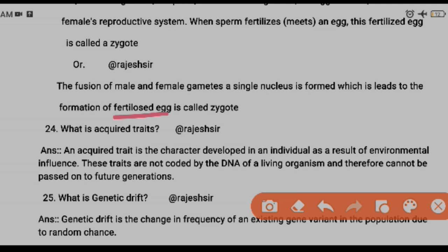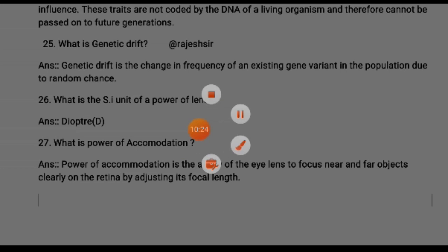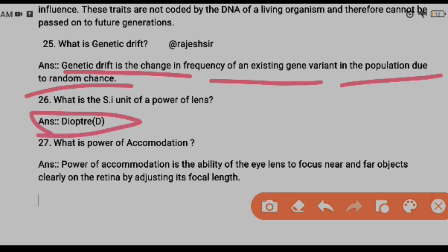Question twenty-five: what is genetic drift? Genetic drift means a drastic change in the frequency of existing gene variants in a population due to random chance. Question twenty-six: the SI unit of power of lens is diopter (D). Question twenty-seven: what is power of accommodation? Power of accommodation is the ability of the eye lens to focus on both near and far objects by adjusting its focal length.